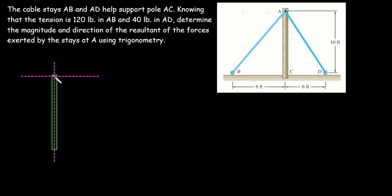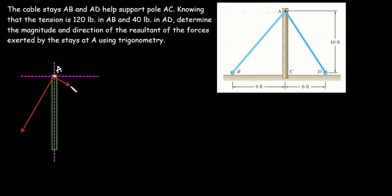Let this be our point A, and the rectangle in green represents the pole. I'm going to draw the force vectors — let this be the 120 pounds force and let this be the 40 pounds force. This is the 120 pounds and this is the 40 pounds force.